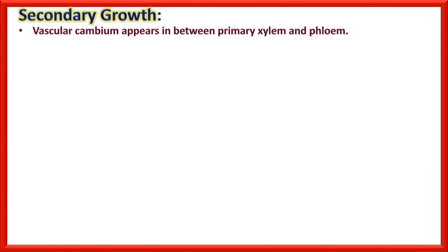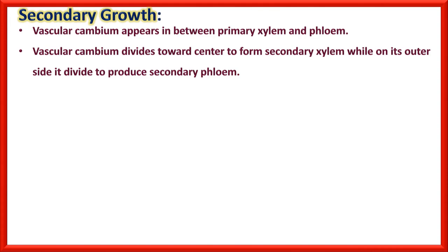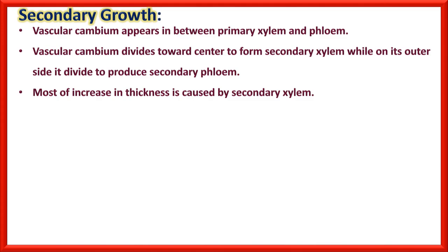Vascular cambium appears between primary xylem and phloem. Vascular cambium divides toward the center to form secondary xylem, while on its outer side it divides to produce secondary phloem. When it divides inward it forms secondary xylem, but when it grows outward it forms secondary phloem. Most increase in thickness is caused by secondary xylem in stems or roots.